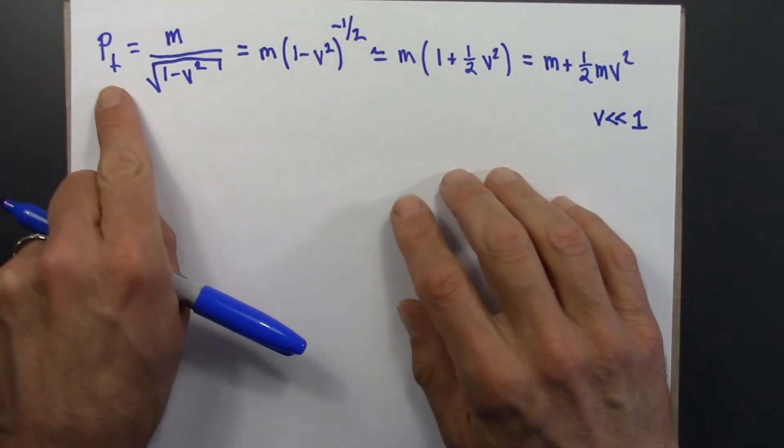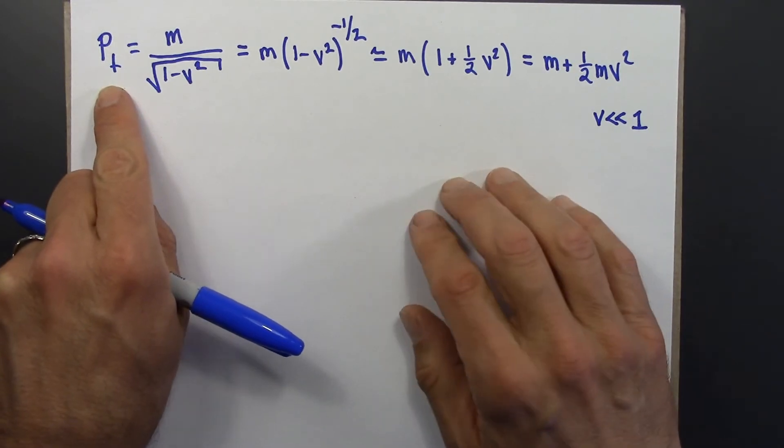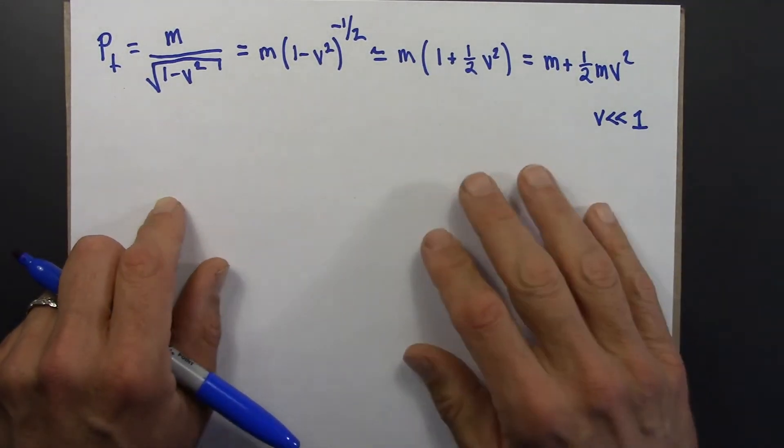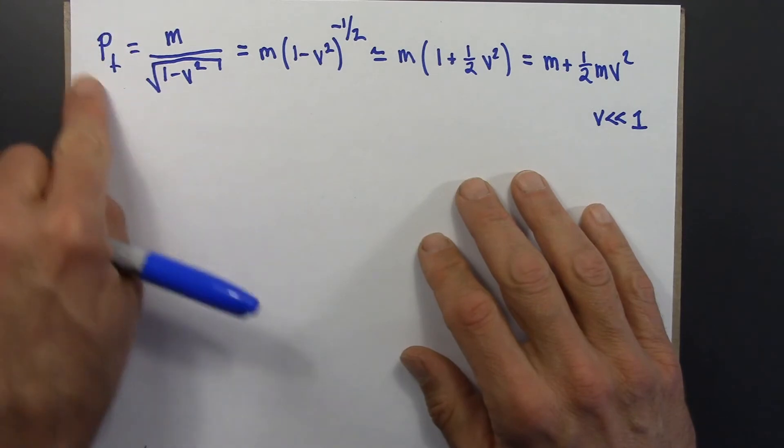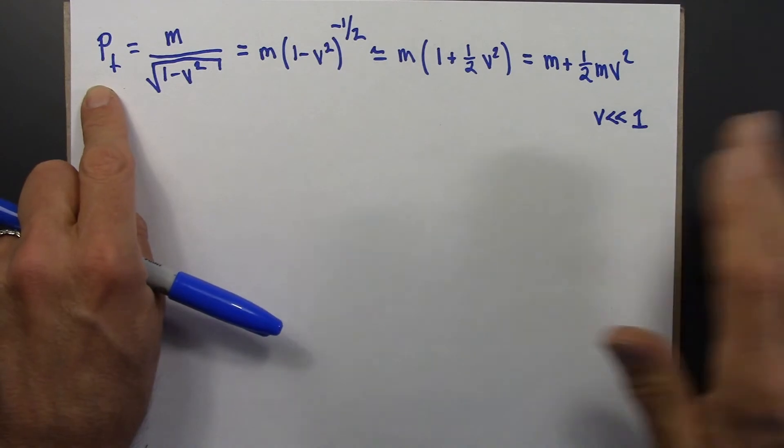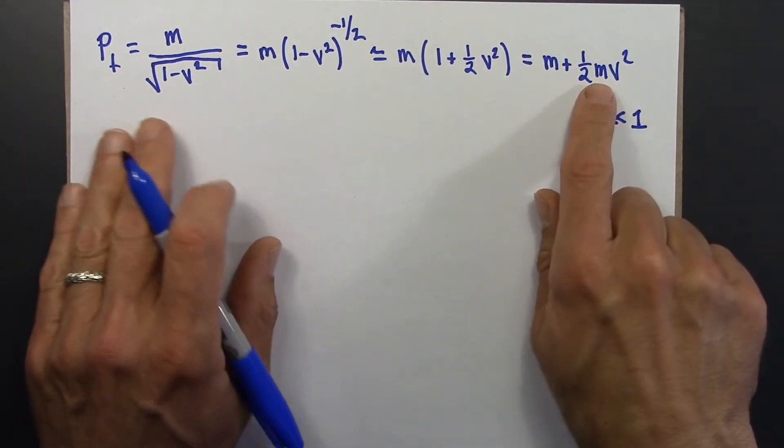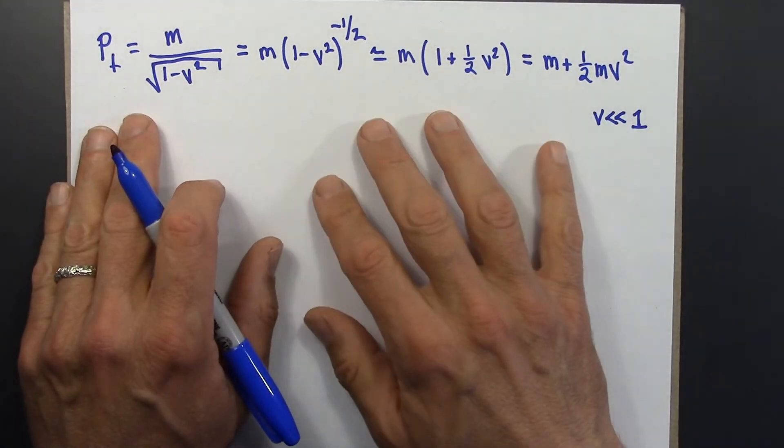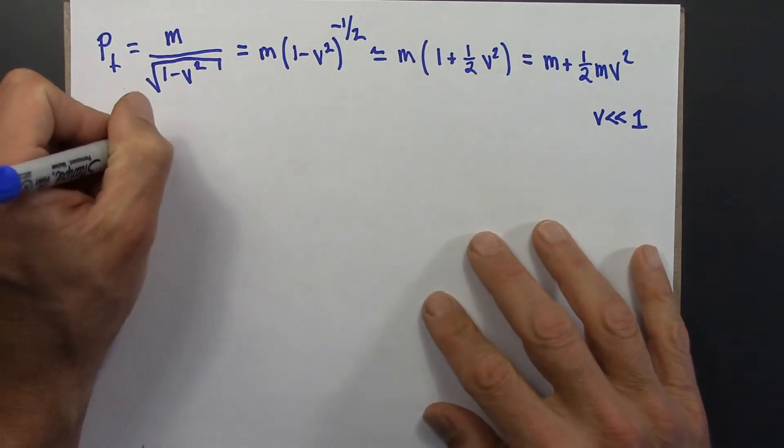Just a reminder that in classical physics, momentum is just x, y, z. There's no time component of momentum. So this was a sort of funny special relativistic thing that was going along for the ride. We weren't sure what it was. But this shows us that it makes sense to call this the energy.